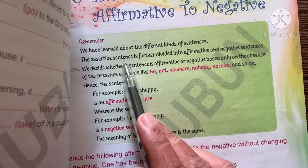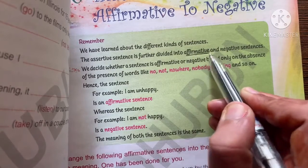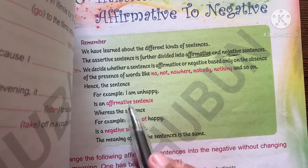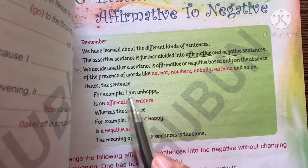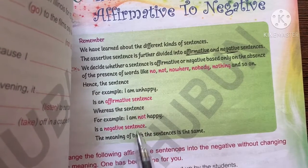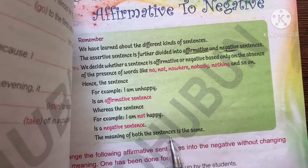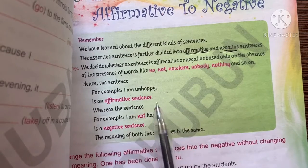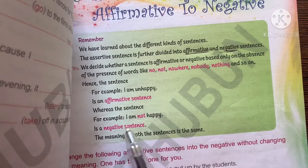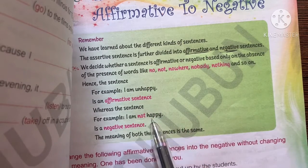Assertive sentences are of two types: affirmative and negative. The first depicts that the sentence is in a positive way — 'I am happy' is affirmative. The second is when the sentence is in a negative way — 'I am not happy.' The meaning of both sentences is the same, although the word 'not' changes the formation of the sentence towards the negative, so it goes from affirmative to negative.